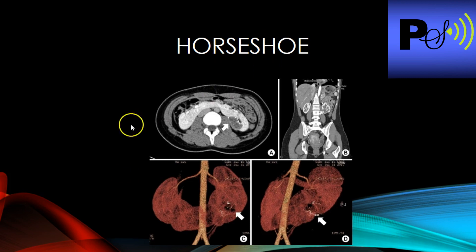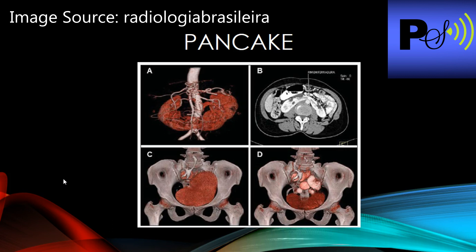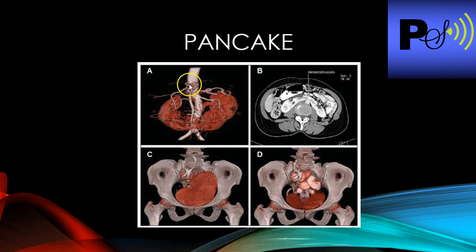Here's a patient with a horseshoe kidney — you can see one renal artery on each side, and the left dips down to where the horseshoe kidney is. That shouldn't be too hard to scan. This patient has a pancake kidney — the kidney is in the bottom of the pelvis with multiple arteries present, which could make finding a stenosis quite difficult.